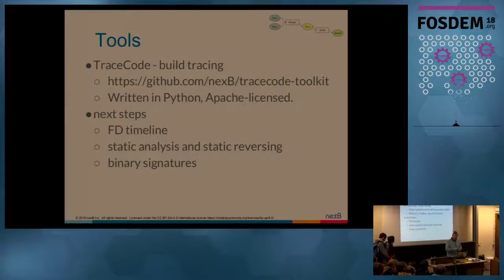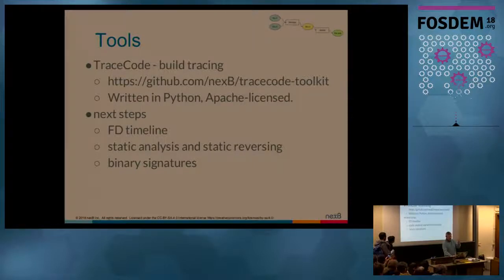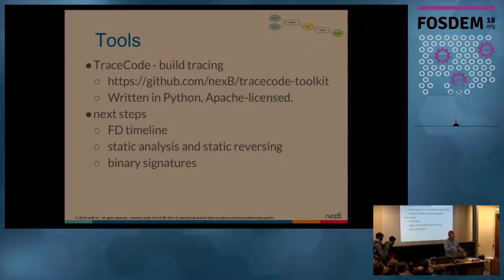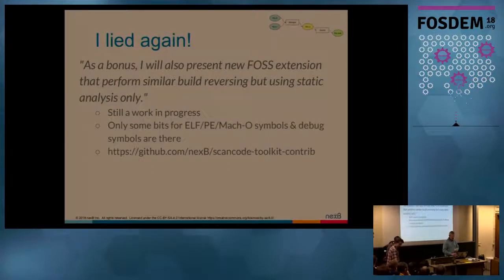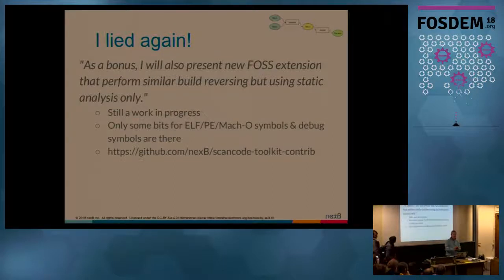The tool is on GitHub, written in Python, Apache license. Next steps include: a file descriptor timeline, a separate tool for static analysis and static reversing using symbols and debug symbols to feed into the same graph, and a more fuzzy approach using signatures on the binary side. I started working on ELF, Mach-O, and Windows PE parsers to extract symbols and debug symbols, but it's still work in progress.